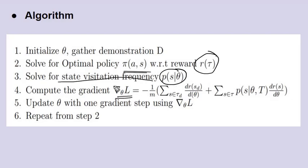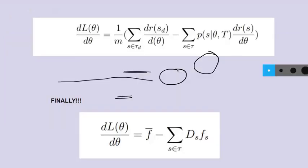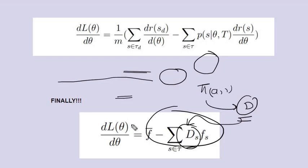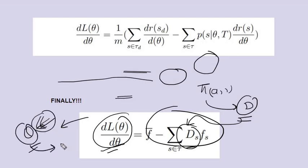We use the state visitation frequency to calculate the gradient we derived earlier, which is the difference of state visitation frequencies between the human expert demonstrations and those of our current optimal policy, times the features. Once we have the gradient, we update the theta parameters using gradient ascent, which should cause the learned policy to converge toward the human expert demonstrations.